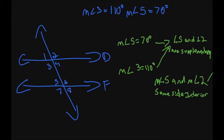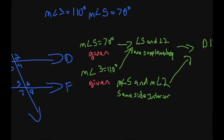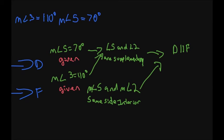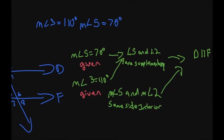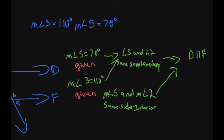Alright, we're going to do one more proof. We know that the measure of angle 3 is 110 and the measure of angle 5 is 70 — both given. Angle 5 and angle 3 are supplementary because they're on the same line — that's the definition of supplementary. And then angle 5 and angle 3 are same side interior angles — that's the definition of same side interior.